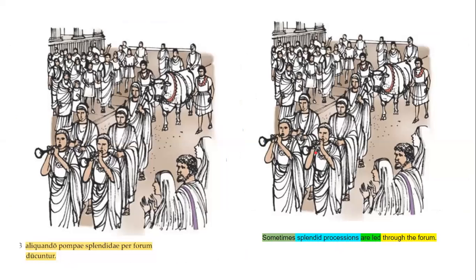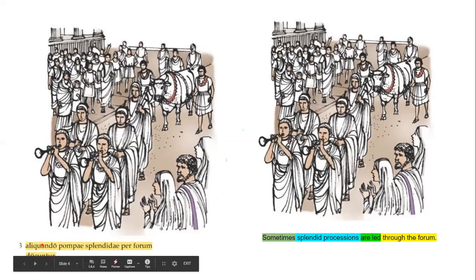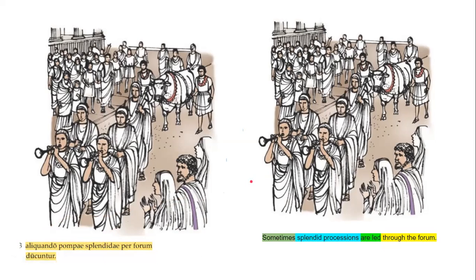'Aliquando pompae splendidae per forum ducuntur.' 'Aliquando' is an adverb of time — sometimes. 'Pompae splendidae' — splendid processions. 'Per forum' — accusative of extent — through the forum. 'Ducuntur' — are led. So putting it all together: sometimes splendid processions are led through the forum.